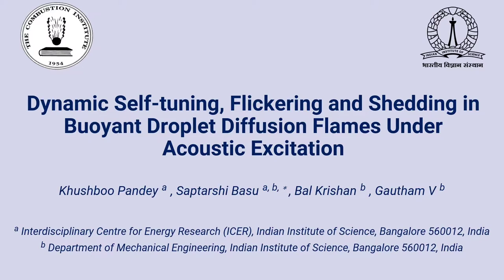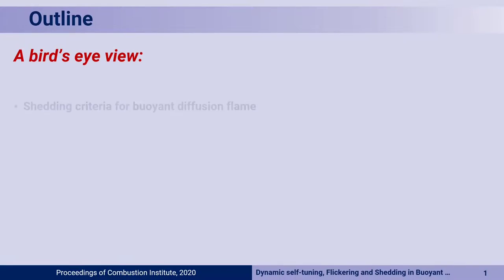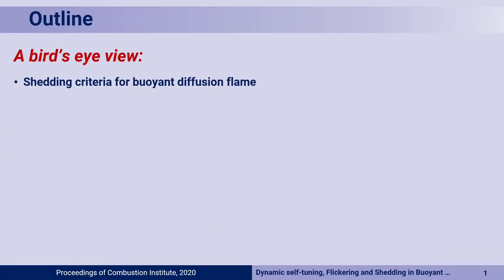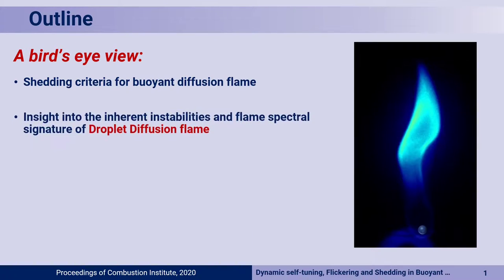Normally, people are very conversant with buoyant diffusion flames. However, buoyant diffusion flames have interesting physics in that they show flickering, which is inherently present due to the buoyant nature of the flame. Most of the work has been done with a fixed fuel source. The work on droplet diffusion flames, which are buoyant in nature — nobody has looked into the inherent instabilities in much detail.